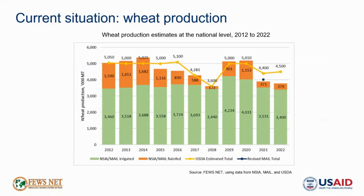Against that background of generally below average income earning and above average prices, agriculture and crop production is the backbone of livelihoods for many rural households. Afghanistan typically produces about half of its national wheat supply. However, the past two seasons have been below average production seasons, with rain-fed wheat production recording the greatest losses. This has resulted in many rural households facing below average wheat stocks and above average cereal purchase requirements. So households are facing reduced stocks, increased expenditure requirements, and reduced purchasing power all at the same time.